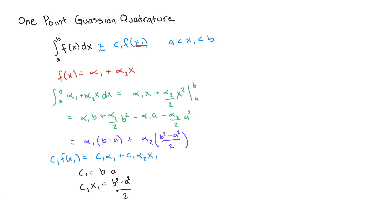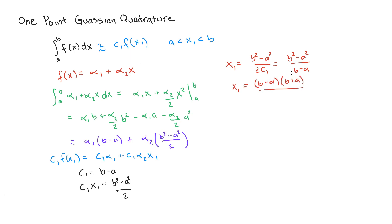All we have to do is isolate x1 and plug it back into f. So x1 is b squared minus a squared over 2c1, and c1 is b minus a. Recognizing that as a difference of two squares, we can factor it: b squared minus a squared is (b minus a)(b plus a), divided by 2 times (b minus a). This simplifies to x1 equals (b plus a) divided by 2.